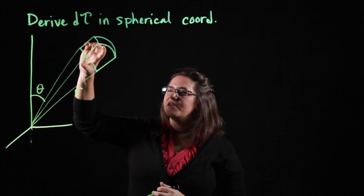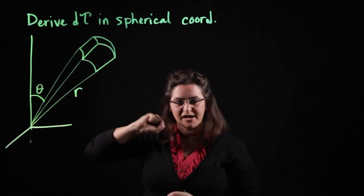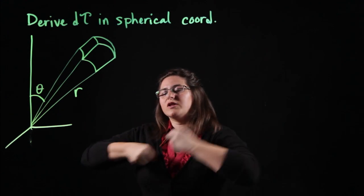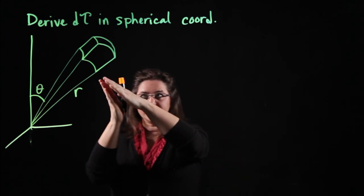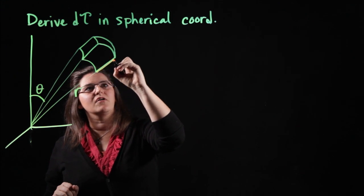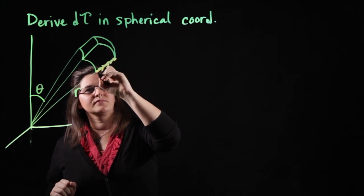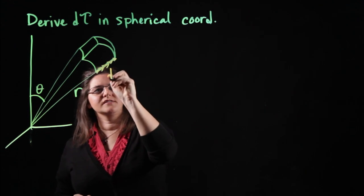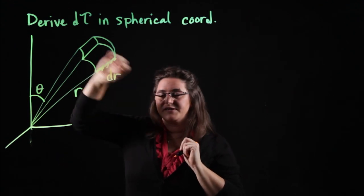The question is: what is the length of each of these sides of the cube? Let's start with the simplest one, that's dr. We know that's a length — it's a tiny bit of length in the r direction. The side of that cube right here is dr.